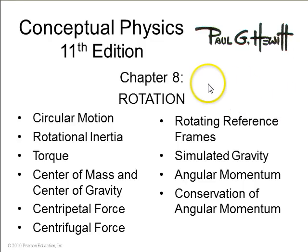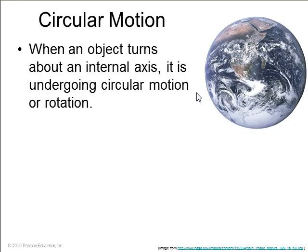Okay, Chapter 8 on Rotation. So when an object turns about an internal axis, it's undergoing rotation, and all the particles in the object are actually going on circular paths, where the centers of all the circular paths are along the same rotation axis.